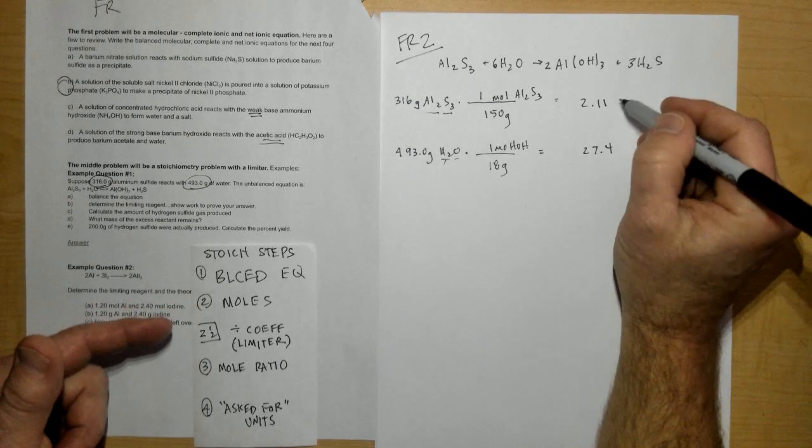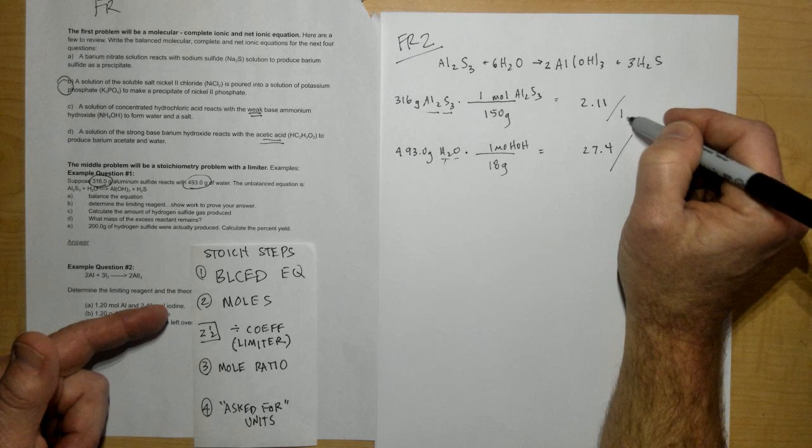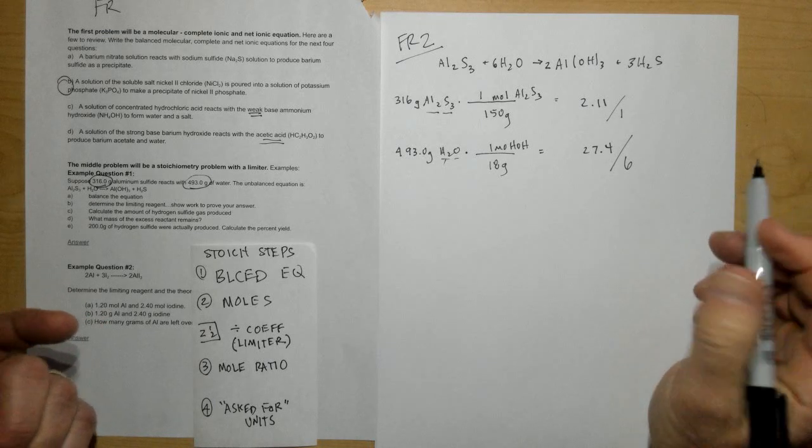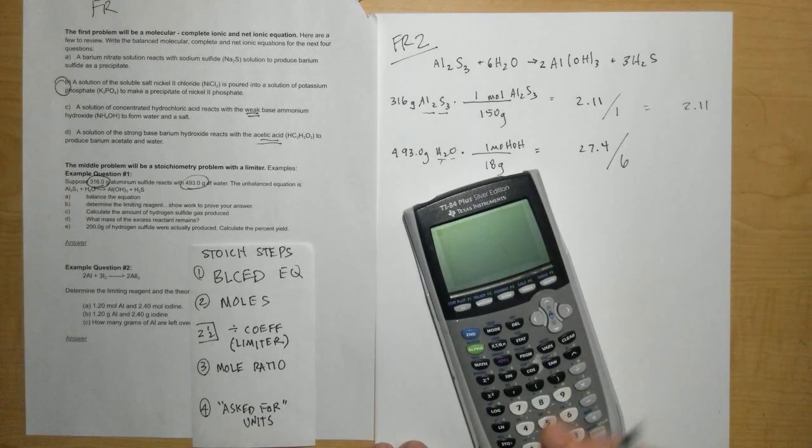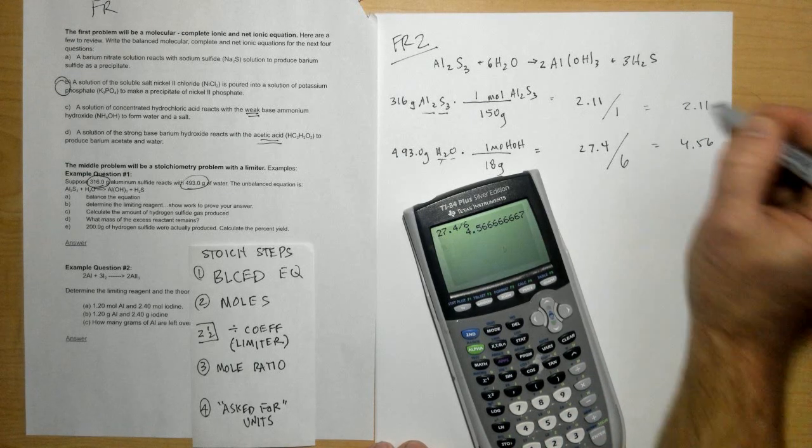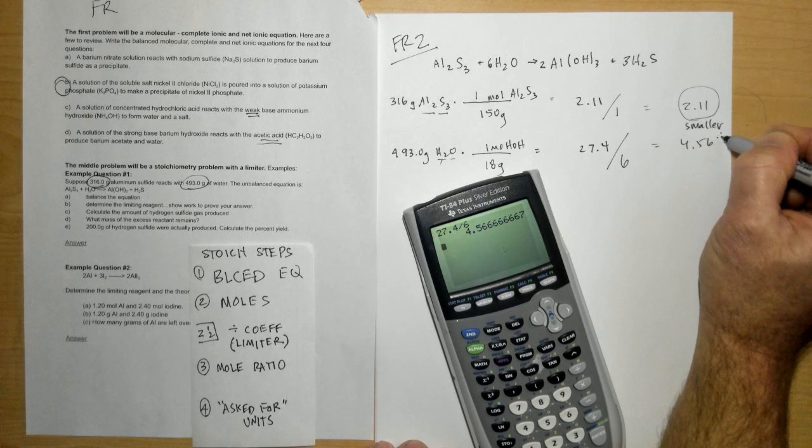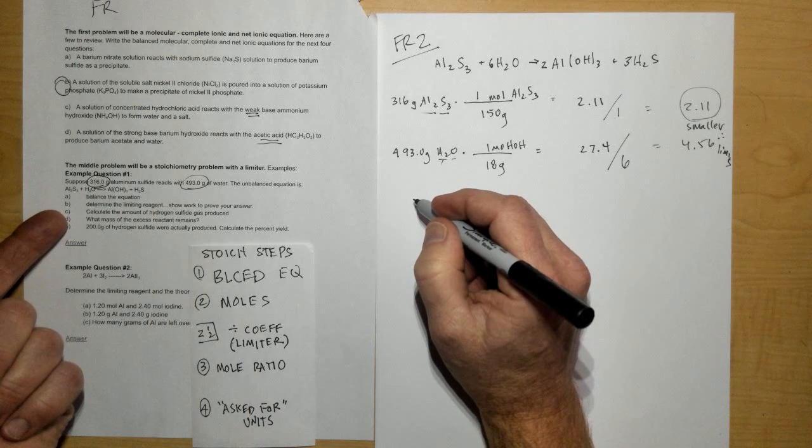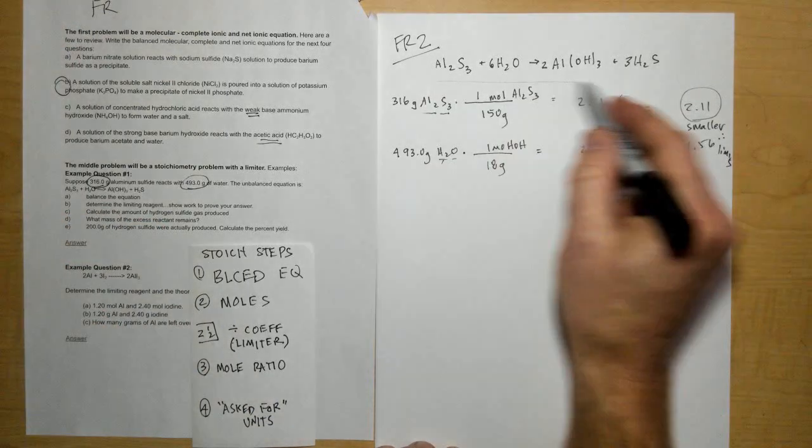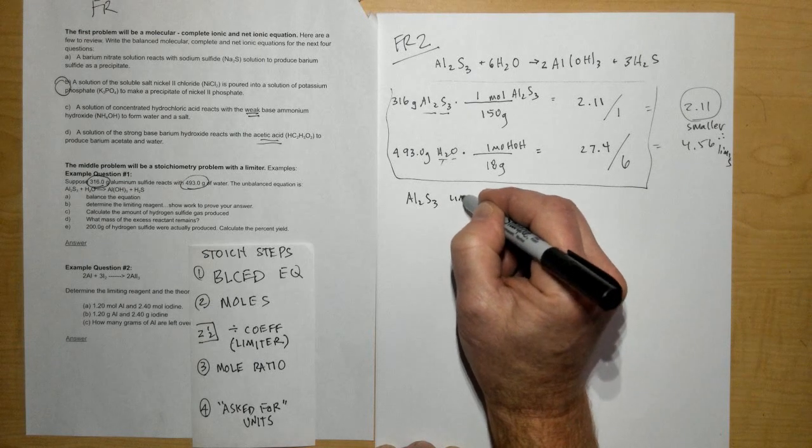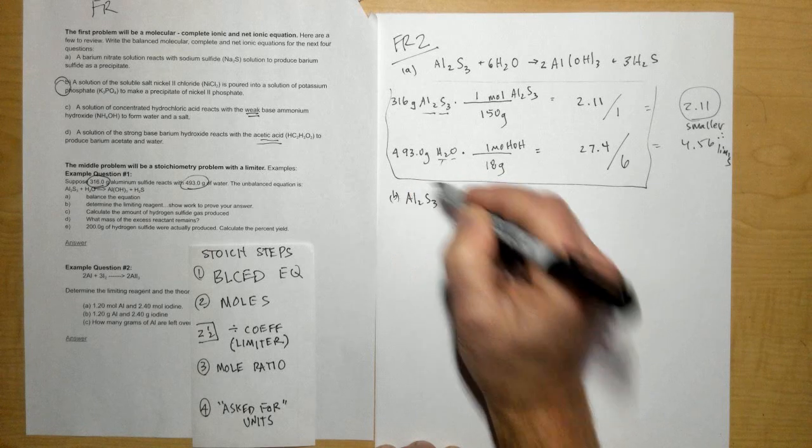Now since I have an amount of both reactants, I need to determine the limiter. The quick, easy, dirty way to do that is to divide by the coefficient. The coefficient here is 1, and the coefficient here is 6. This will end up being 2.11, and 27.4 divided by 6 ends up being 4.56. So this one ends up being the smaller one, and therefore this is our limiter. Answering question letter B, determined the limiting reagent—this would be showing my work, and the smaller one, the one that's going to be used up first, is my limiter. So Al2S3 limits. Going back here, this was letter A. This is the answer to letter B.